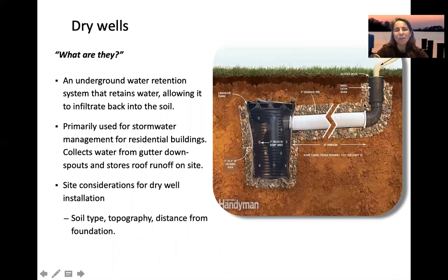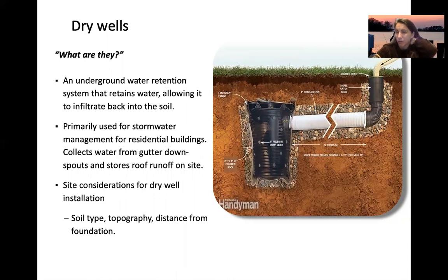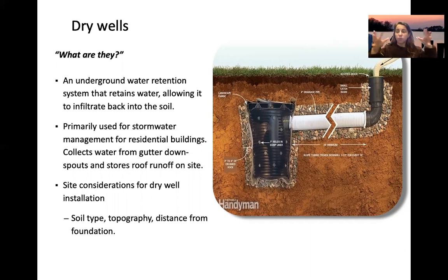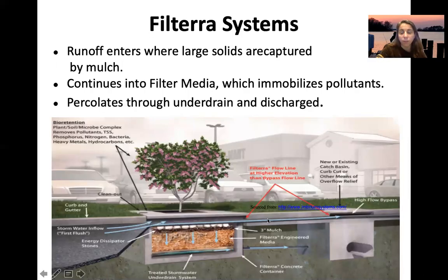Dry wells are similar to bioswales but without the ecology component. An underground retention structure retains water and then allows it to infiltrate back into the soil, similar to a leach field with no above-ground plants. They're typically used for residential buildings without large open areas, capturing all water from a roof. The structure has holes in a barrel buried in the ground, allowing water to flow through into the surrounding underground area.